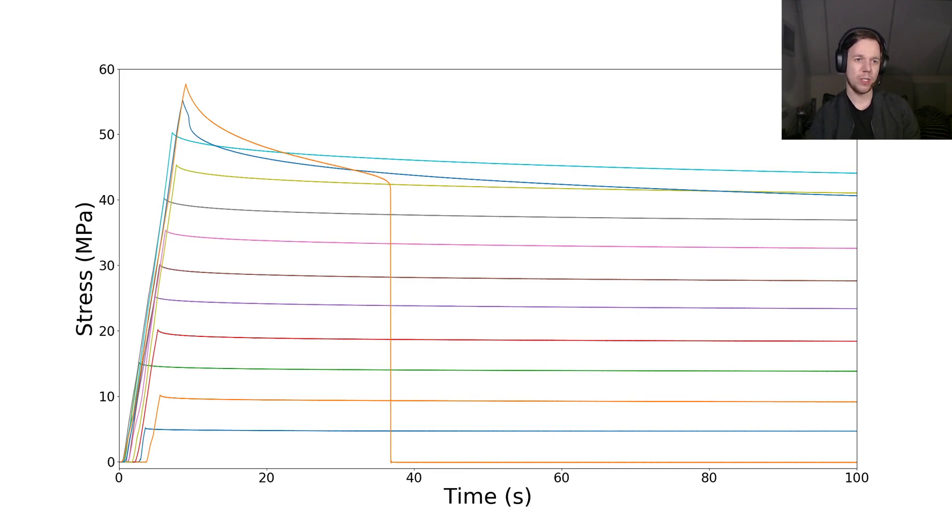So what we see here is all the same experiments of the last graph, except the time axis is now shrunk to the first 100 seconds. And looking in particular at the highest stress experiment here, the 75.5 MPa experiment, we see that after about 37 seconds, the sample snaps. And this is a really interesting result.